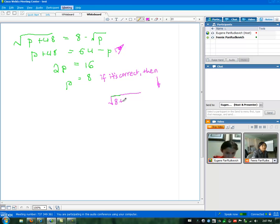Let's double check it here. So you have p equals 8, right? Okay. 8 plus 48 equals 8 minus radical p, which is 8. Okay, so this part is what? So then it should be the square root of 56.